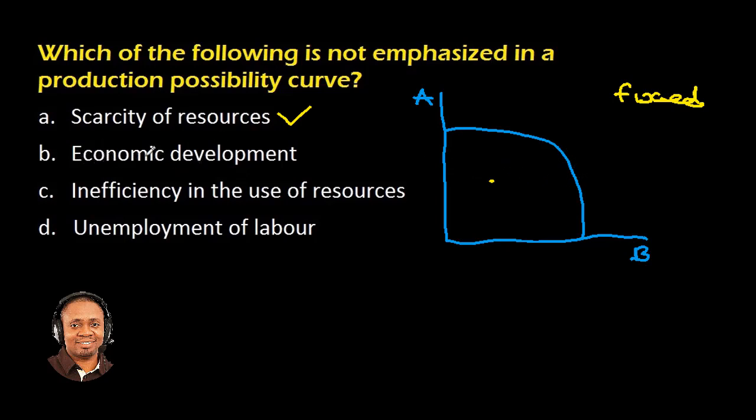The second option, economic development. Don't mistake it for economic growth. Economic development has to deal with the social and political welfare of the people in the country. Although it implies economic growth, it is not shown in the PPC curve. Economic growth itself is shown in the PPC because it deals with the increase in the level of output. So economic development is not shown in the PPC.